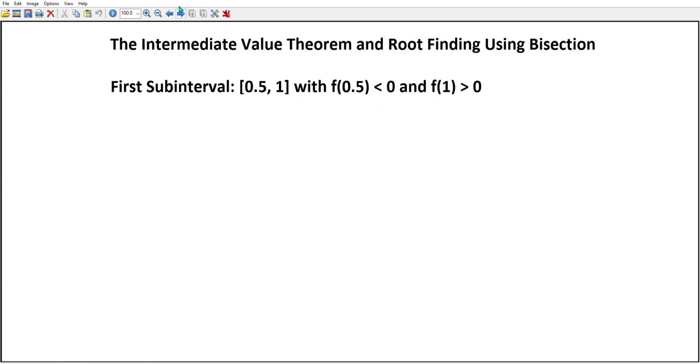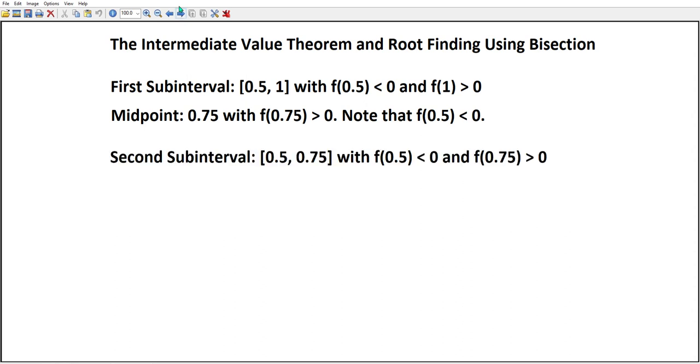So we bisect again, and the midpoint is 0.75. The only thing that's important is when you plug 0.75 into the function, you get something bigger than zero. We note that at 0.5 the function is less than zero. So we've got a new interval, [0.5, 0.75], where at 0.5 the function's negative and at 0.75 the function's positive. There's a root in there someplace.